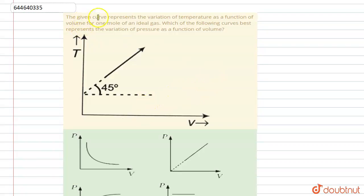The question says: In the given curve represent the variation of temperature as a function of volume for one mole of ideal gas. Which of the following curves best express or represent the variation of pressure as a function of volume?